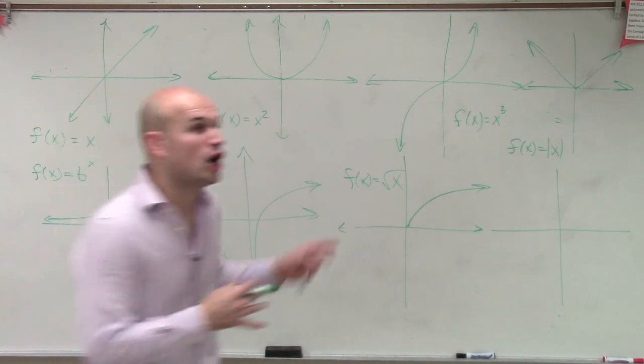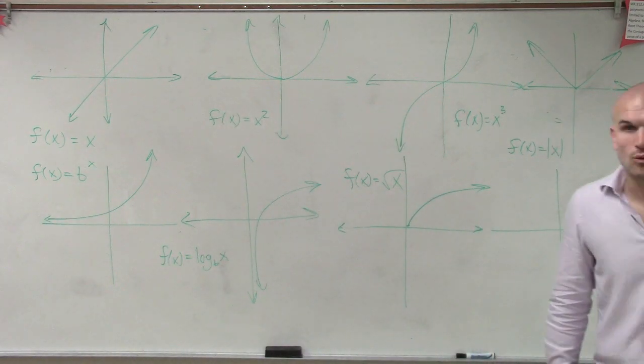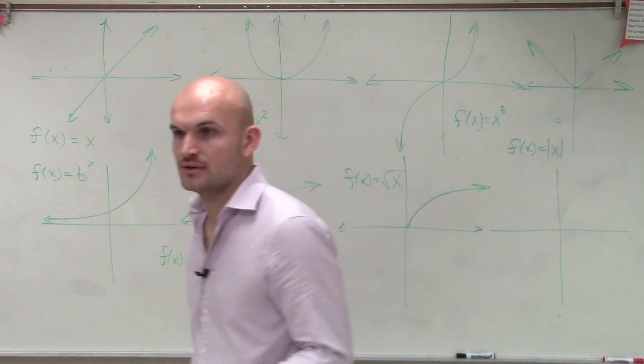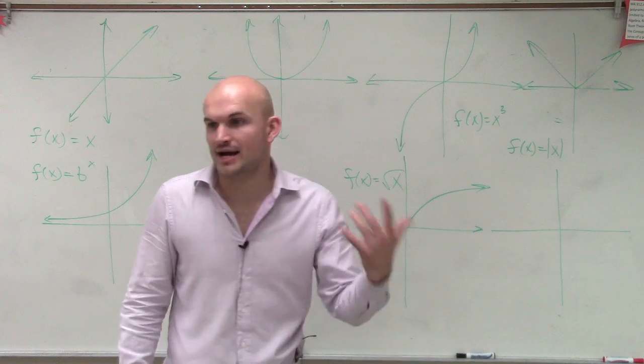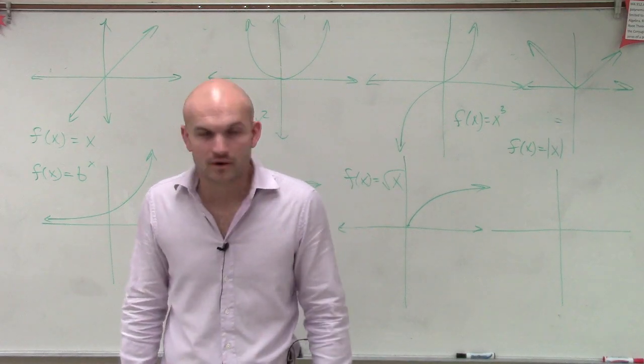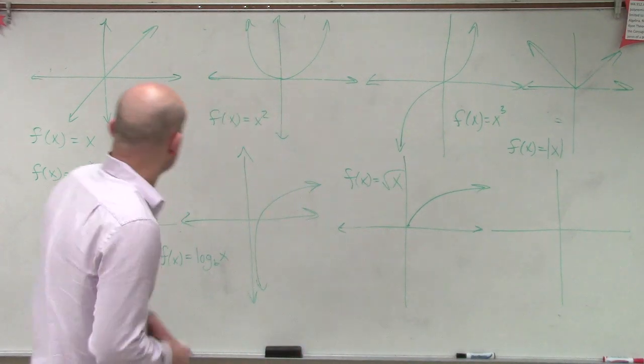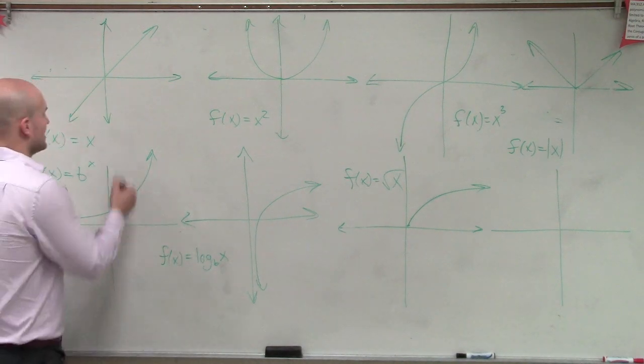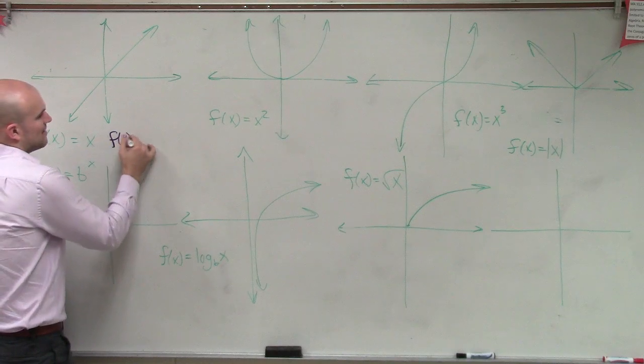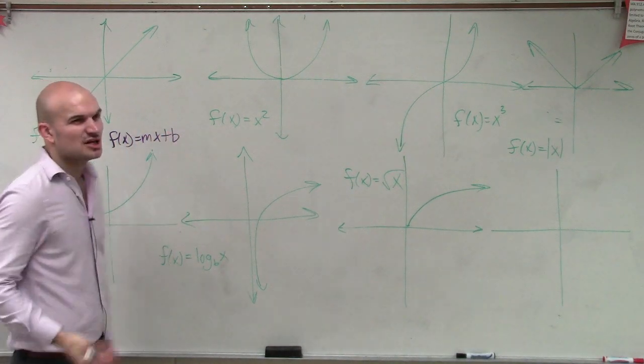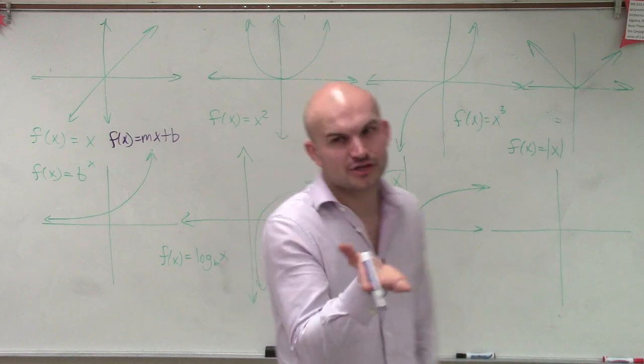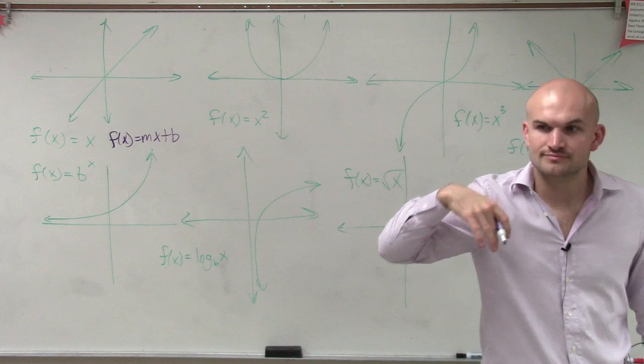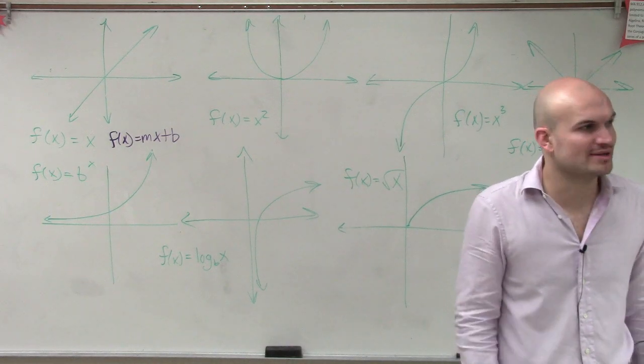So these have been all the functions that we've talked about. And with each function, what we've kind of dealt with or talked about is how we can transform the function, how we can move it, shift it left or right, up or down, or anything like that. Now, for the linear function, we didn't really deal with the transformations. But we mostly just kind of talked about in mx plus b form. Because we know the slope is going to, your m is going to change your slope, and b is going to change your y-intercept. That's pretty much all we talked about with the linear equation.